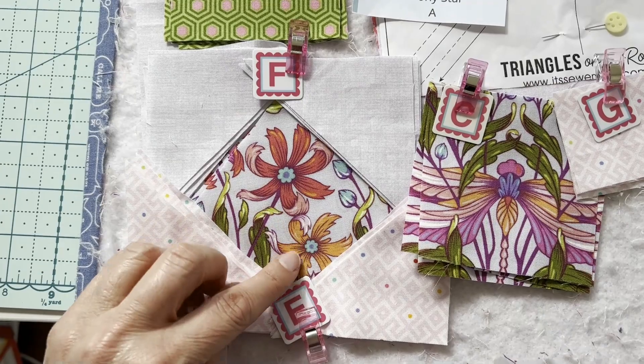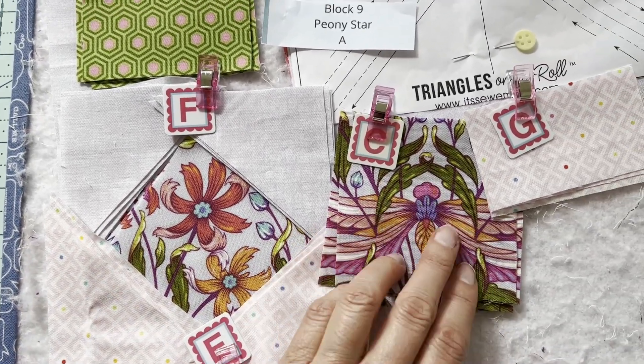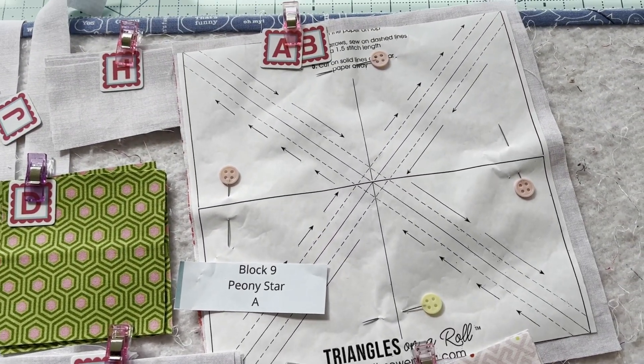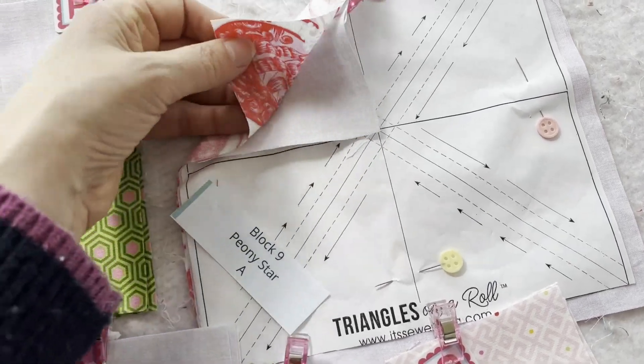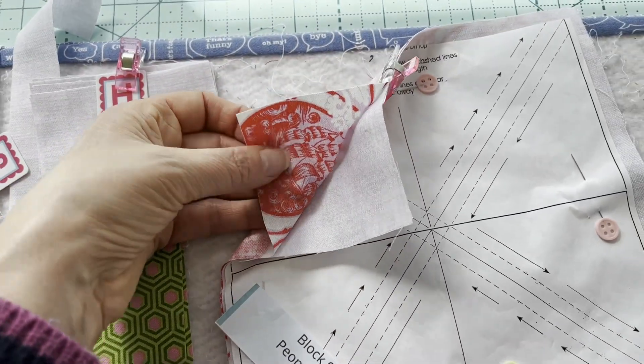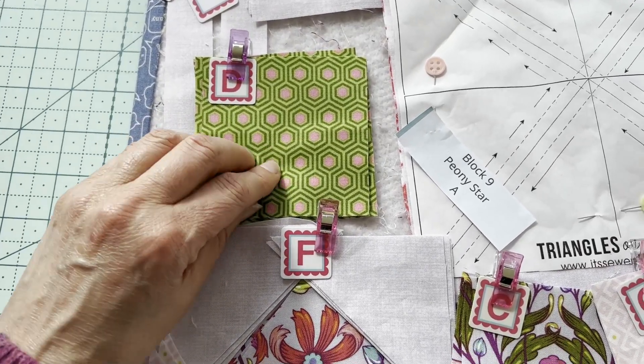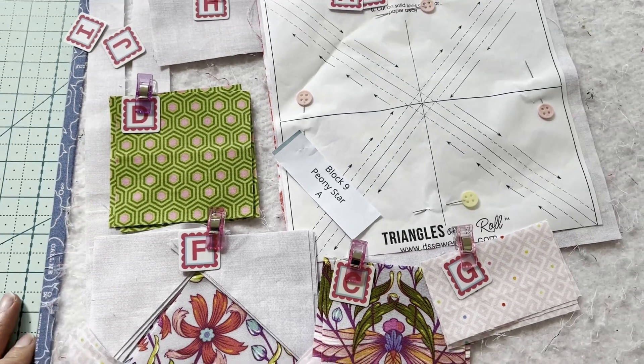So I fussy cut the flowers for the centre of the square in the square. I fussy cut the dragonflies for the corner squares and I'm using the triangles on a roll for all of the half square triangles. I'm using the Parisville ship fabric and this green hexi swept a little pink. I had that sitting in my stash from ages ago, so I'm going to use a little bit of that as well.